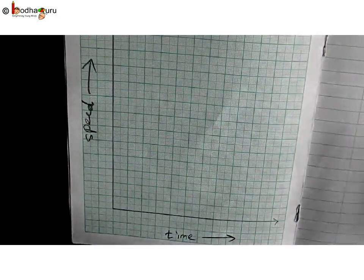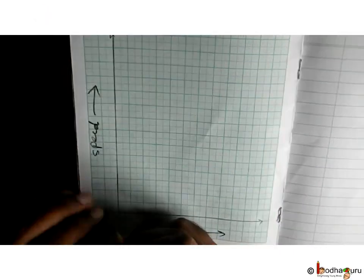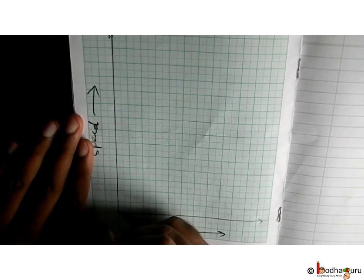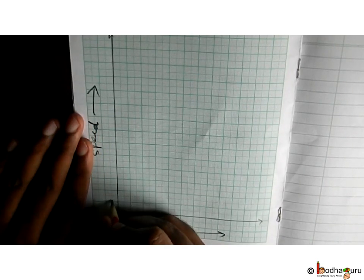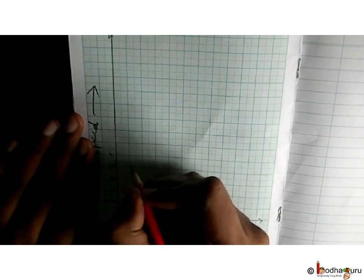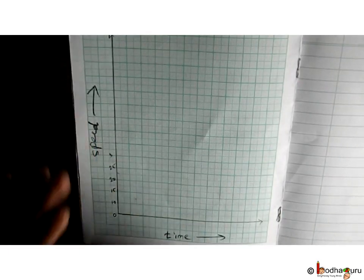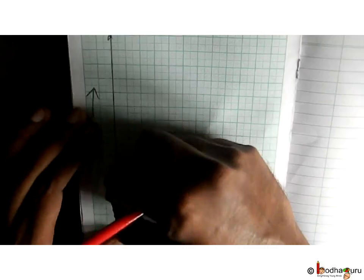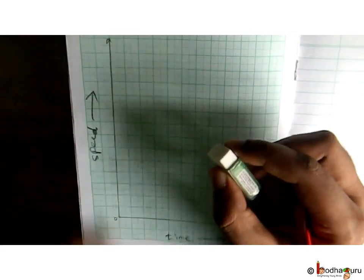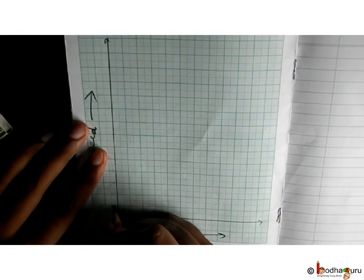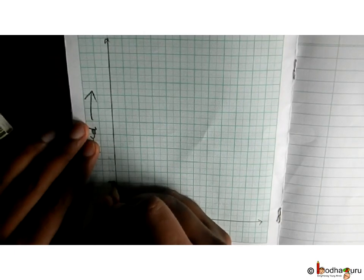This would require the graph paper to be too long. Hence, here we assume the side of the bigger square as showing 10 km per hour. Thus, we would be able to represent 45 units by just using 5 big squares vertically on the y-axis.